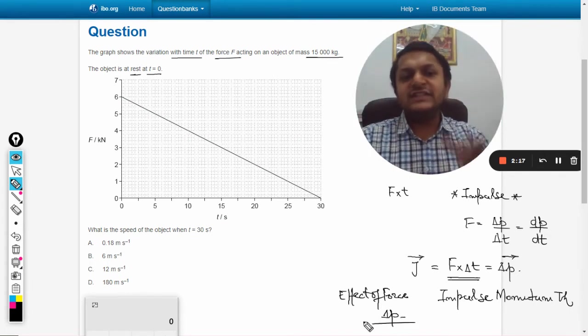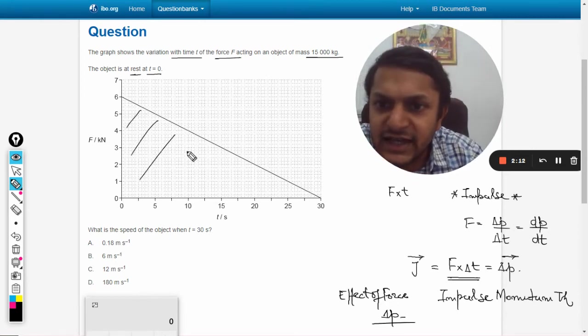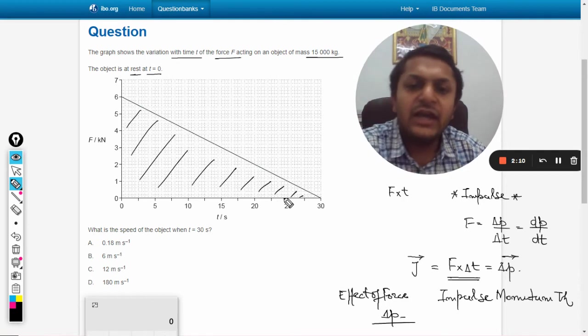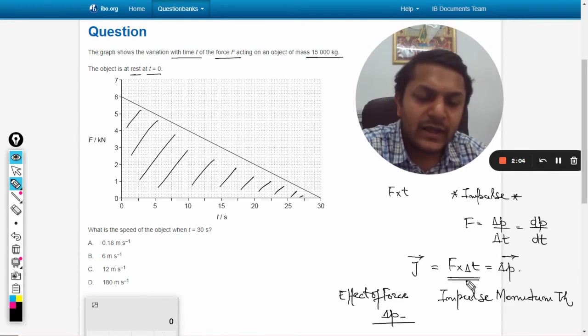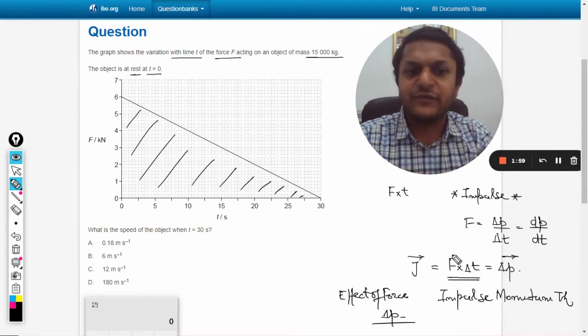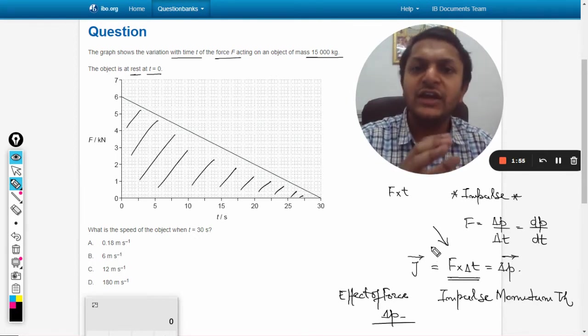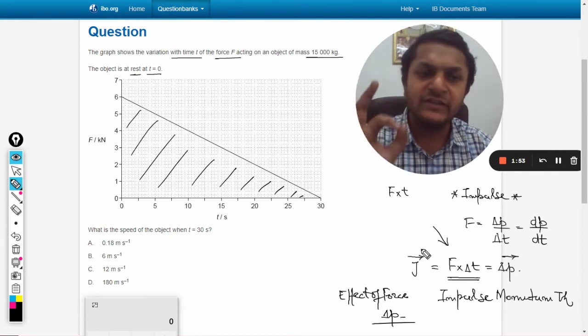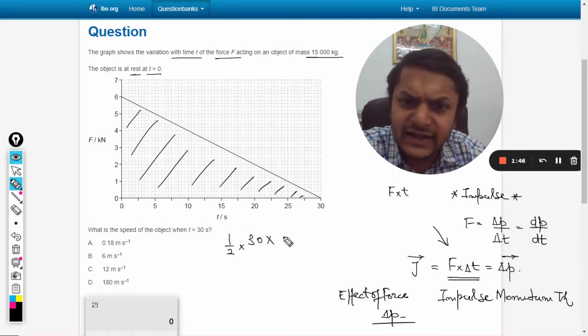This is the background theory. Now we are going to find the area. This area will be the impulse. Don't go for F into delta t because this formula will be used when force is constant. If force is not constant, we have to find the area under the curve. The area under the curve is half into base into height. The base is 30 seconds, height is 6 kilonewton.